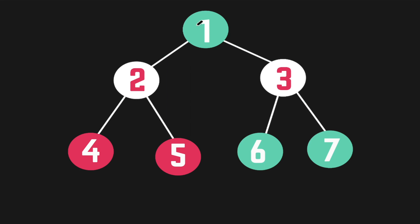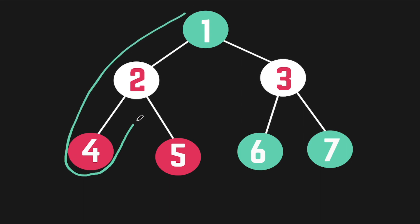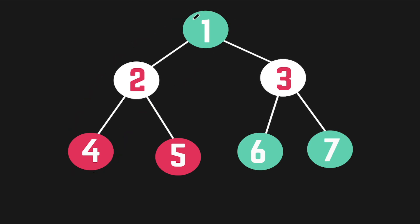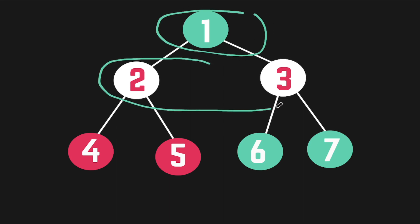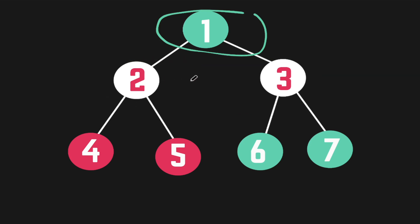Depth first search is better if you're starting at a node and need to traverse far away from it, deep down. If you know you need to dive down to a leaf, for example, you'd want to use depth first search. But if you know the node you're looking for is somewhere near the top, you'd probably opt for breadth first search because it will find it immediately at the next level.